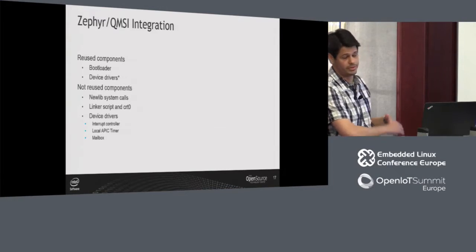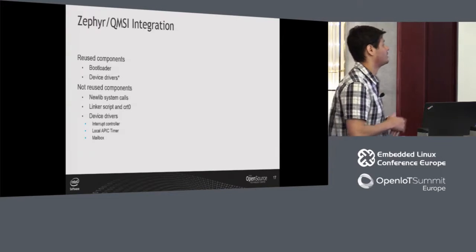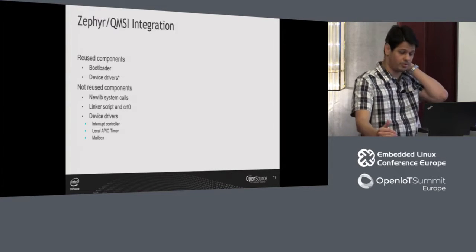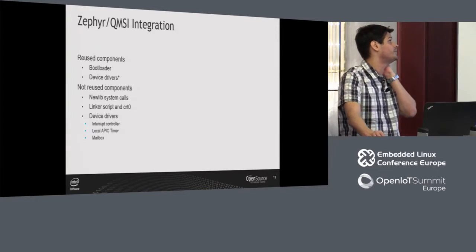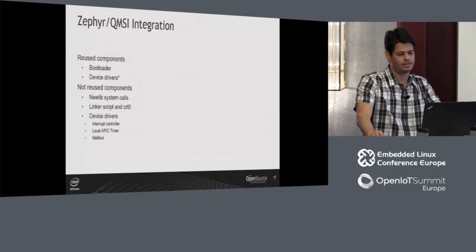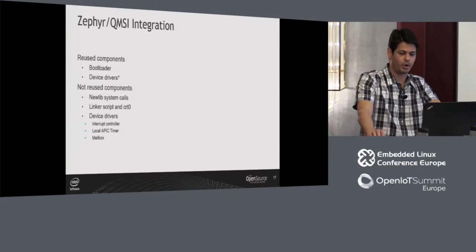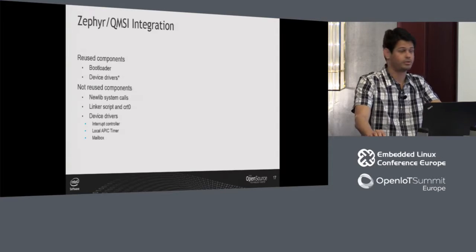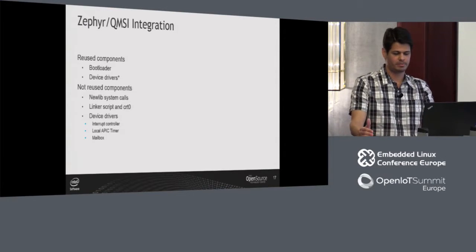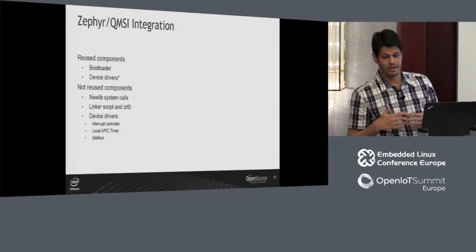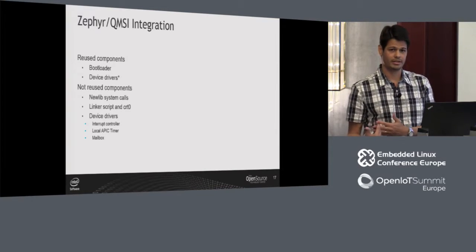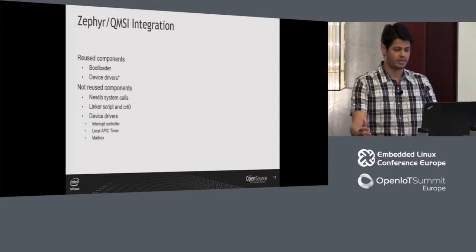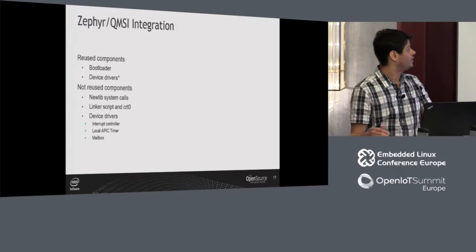Zephyr reuses some components from QMSI and others don't. The components that are reused include the bootloader — it is the default bootloader for Quark D2000 and Quark SE dev board ports in Zephyr, though not the default for Arduino 101. Reusing the bootloader means on the Zephyr side we don't have to redo the low-level x86 initialization. For instance, we don't set up the GDT because the bootloader already did that.